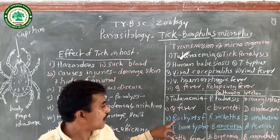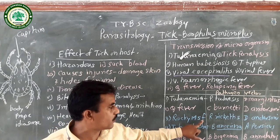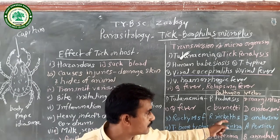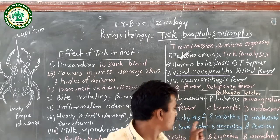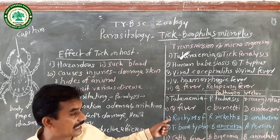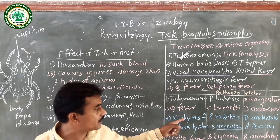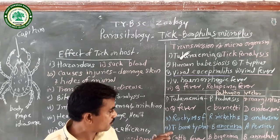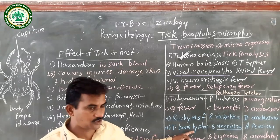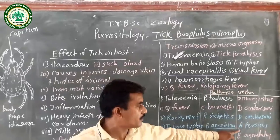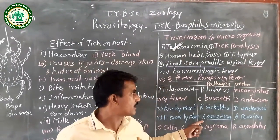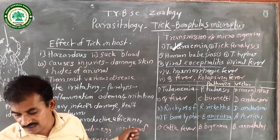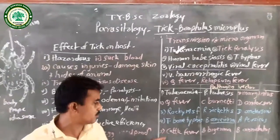Rocky Mountain spotted fever: the pathogen is a Rickettsia species transmitted by Dermacentor, found in different cattle. Cattle immunity declines and they suffer from tick fever, leading to death under heavy infection. Another tick-borne disease is transmitted by the tick vector Argas persicus, where the pathogen is a Babesia species, transmitted to cattle, dogs, and cats.